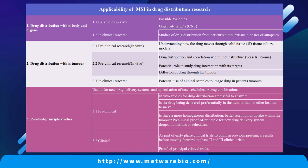The application of spatially resolved metabolomics in pharmacokinetics can be divided into three general directions: 1. Drug distribution in vivo and in tumor organs. 2. Drug distribution within tumors. 3. Validation of the principle and mechanism of action of drugs.